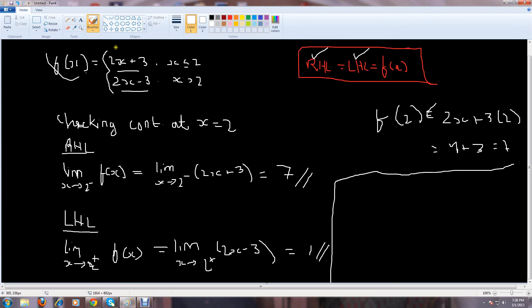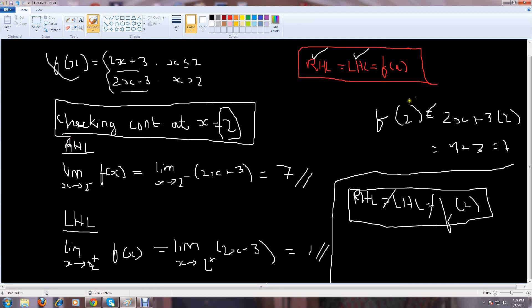Now, do me a favor and tell me, is 2 a continuous point or a discontinuous point? Because, we checked the RHL, we checked the LHL, and we also checked f of 2. Now, tell me, is this all equal? No, right? So, we have RHL equal to f of 2, but LHL is not equal to either RHL or f of 2. So, we can say that x is equal to 2 is the point of discontinuity for this function.